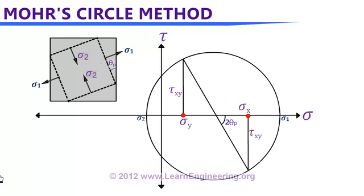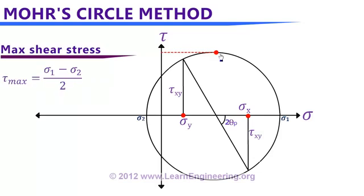The second requirement of the designer is the maximum shear stress value. From the Mohr's circle, maximum shear stress occurs at the topmost point of the circle. The value of this maximum shear stress is equal to the radius of the Mohr's circle, which can be expressed as (sigma 1 minus sigma 2) divided by 2 — that is, half the diameter of the circle. This concludes the two-dimensional analysis.